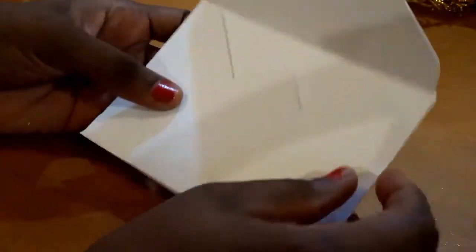And there you have it guys, a perfect 4 bar envelope made from 110 pound cardstock. So that's it guys, thanks for watching.